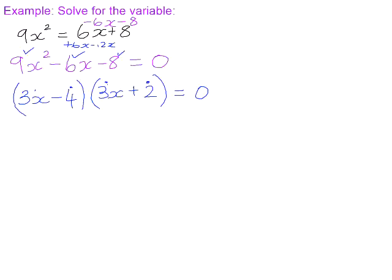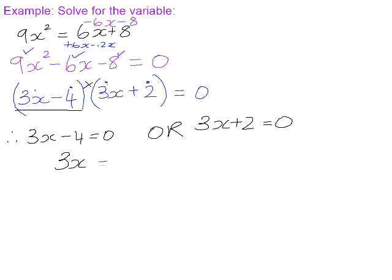Now that we've got a product, we've got 3x minus 4 times 3x plus 2 equals 0, we can conclude that either this factor must be equal to 0, because 0 times 3x plus 2 will give us 0, or we can conclude that the second factor is equal to 0. So if we now solve for x, this is now just a linear equation because my x is to the power of 1, so we solve it by isolating the x on one side, so we get x to be 4 over 3.